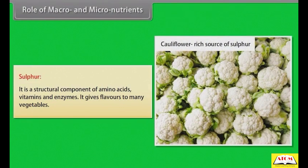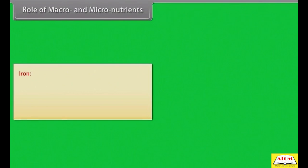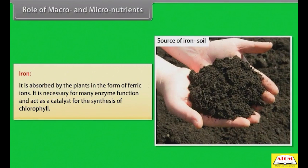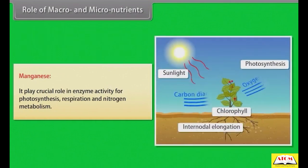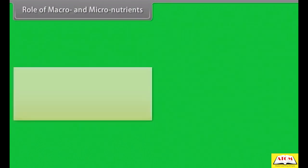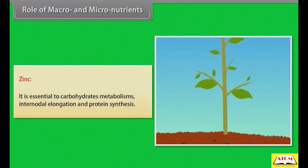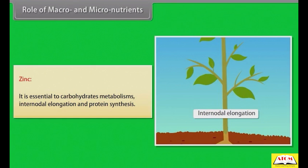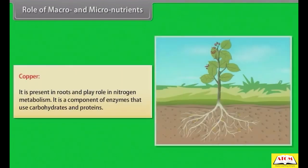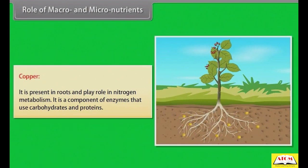Sulfur: it is a structural component of amino acids, vitamins and enzymes. It gives flavors to many vegetables. Iron: it is absorbed by plants in the form of ferric ions. It is necessary for many enzyme functions and acts as a catalyst for the synthesis of chlorophyll. Manganese: it plays a crucial role in enzyme activity for photosynthesis, respiration and nitrogen metabolism. Zinc: it is essential for carbohydrate metabolism, internodal elongation and protein synthesis. Copper: it is present in roots and plays a role in nitrogen metabolism. It is a component of enzymes that use carbohydrates and proteins.